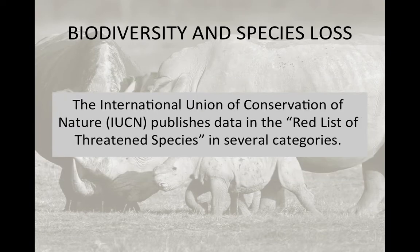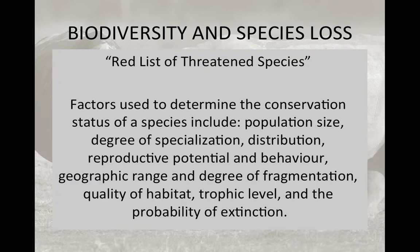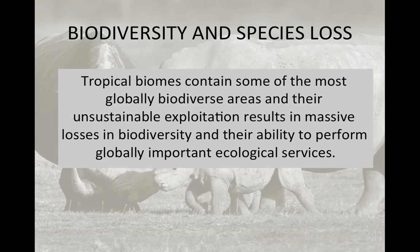The International Union of Conservation of Nature was established to categorize populations and species as extinct, endangered, critically endangered, vulnerable, or unknown. To build the Red List, they examine many factors: population size, degree of specialization, distribution, reproductive potential and behavior, geographic range and fragmentation, habitat quality, trophic level, and most importantly the probability of extinction. As mentioned in previous units, tropical biomes are regions with high global biodiversity, very important for medicine and pharmaceuticals derived from plants and animals.